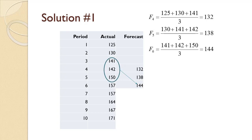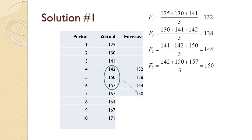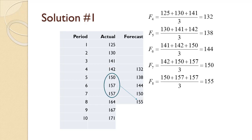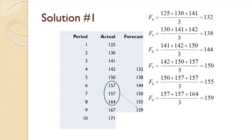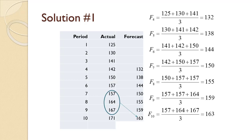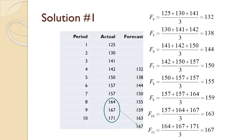F6 equals 141 plus 142 plus 150 divided by three equals 144. F7 equals 142 plus 150 plus 157 divided by three equals 150. F8 equals 150 plus 157 plus 157 divided by three equals 155. F9 equals 157 plus 157 plus 164 divided by three equals 159. F10 equals 157 plus 164 plus 167 divided by three equals 163. F11 equals 164 plus 167 plus 171 divided by three equals 167.